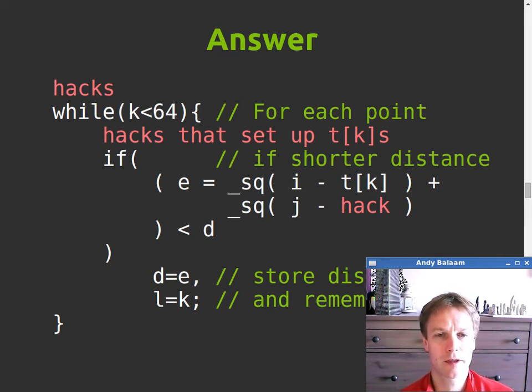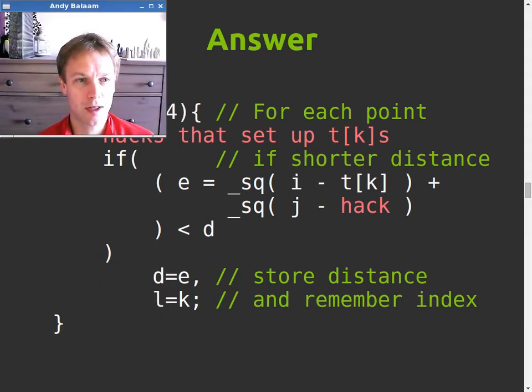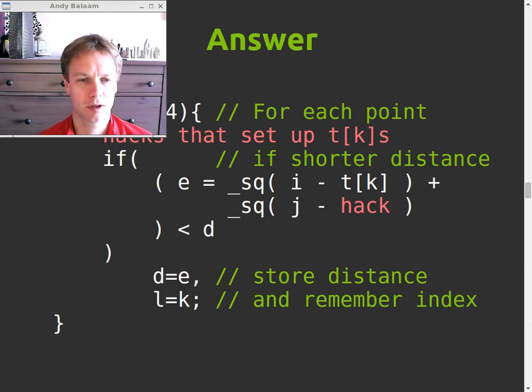So what we say is we set e to be this distance value, square of the distance. But at the same time as setting e, we also say if that's less than d, then go into the body of the loop. d is the distance to the closest site. You remember, we set that up at the beginning to be a large number. So if this site we're looking at now is the closest site, then set d to be that distance, remember it, and remember the index of this site in l. So that's basically what you'd expect. We're looking through all the sites and saying which one's the closest, remember the distance to it, and remember which one it is.